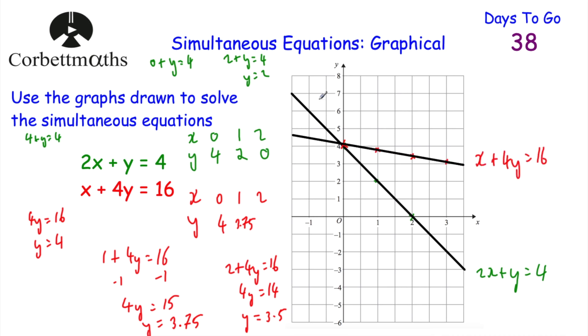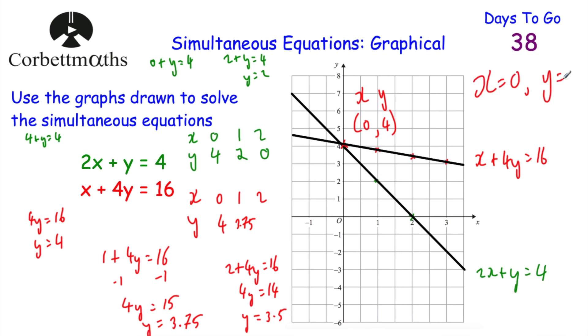As you can see, the two graphs meet at the point (0, 4). So x is equal to 0 and y is equal to 4. That's our answer. Well done if you got that.